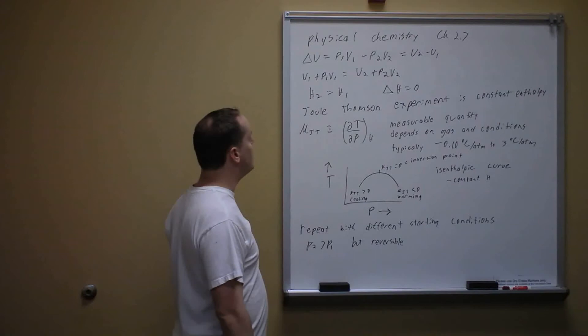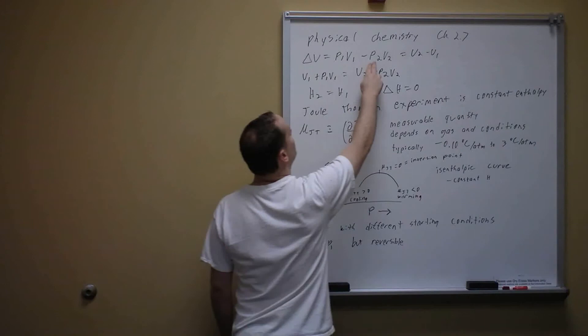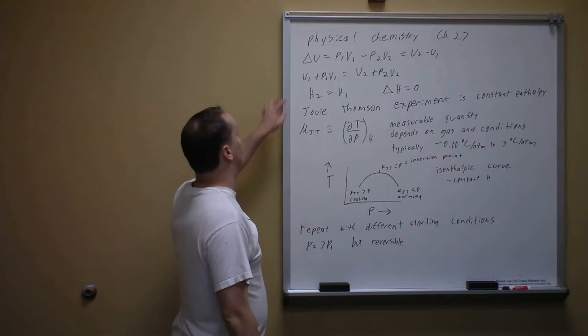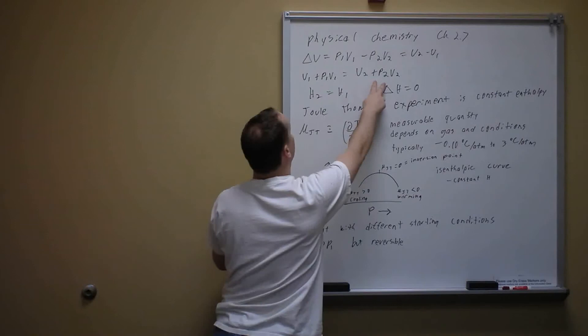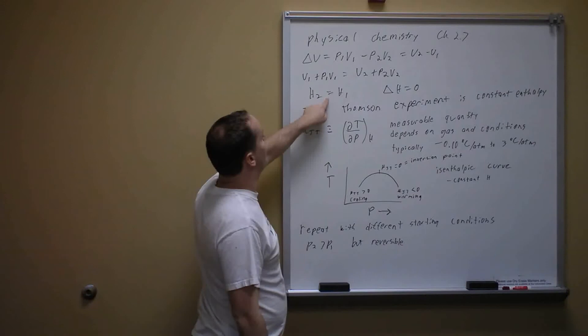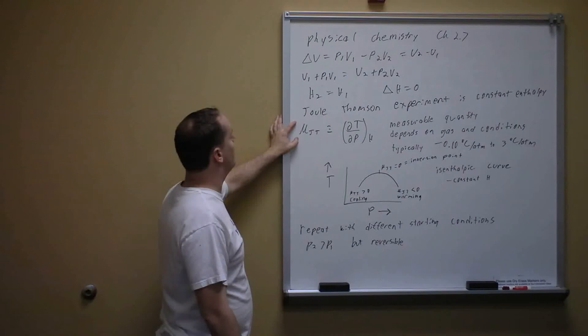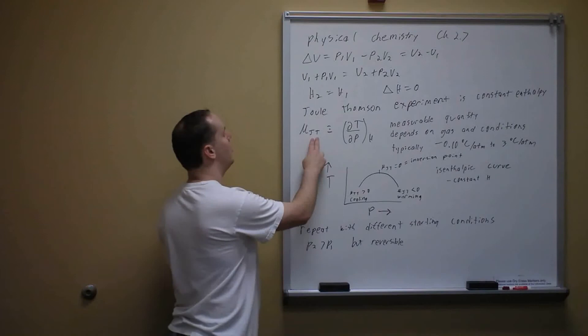Since the Joule-Thompson experiment is adiabatic, delta U equals P1V1 minus P2V2, and rearranging gives U1 plus P1V1 equals U2 plus P2V2. Since enthalpy H is defined as U plus PV, this means H1 equals H2, so delta H equals zero. The Joule-Thompson experiment is therefore a constant enthalpy process. We define the Joule-Thompson coefficient μJT as the derivative of temperature with respect to pressure at constant enthalpy — note this is distinct from the Joule coefficient μJ.